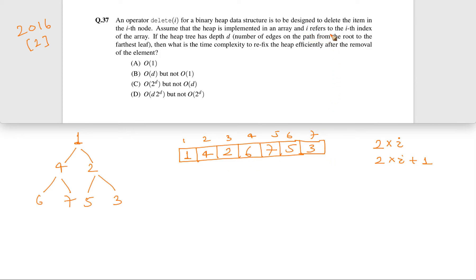Now they are saying that i refers to the ith index. Then if we are deleting ith element, we are calling it delete(i). And we have to find the time complexity to refix once delete(i) operation has been done. So let's say for example that delete 4 is occurring.